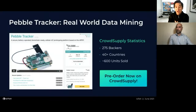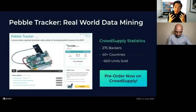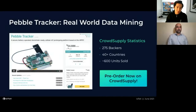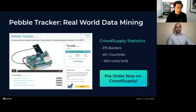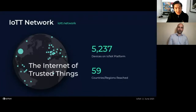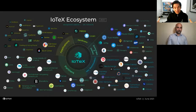Pebble Tracker comes in a sleek consumer-facing case but was designed for developers, shipping soon — probably late July or early August due to chip delays. For this Gitcoin hackathon, we've built a simulator tool that lets you replicate Pebble Tracker data and start building it into your decentralized applications. The IOTEX network already covers over 5,200 devices across 60 countries and the ecosystem is growing.